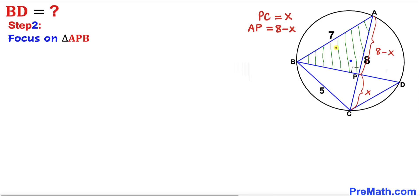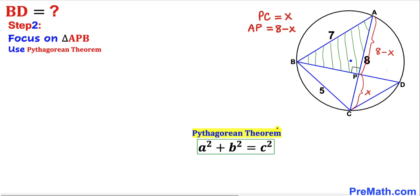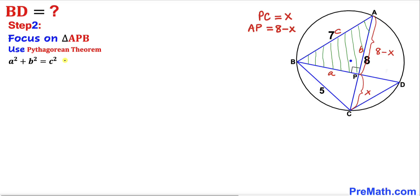Let's focus on triangle APB. We know that this is a right triangle, so therefore we are going to use the Pythagorean theorem: A² + B² = C². The hypotenuse is C. Filling in the blanks: BP² + (8 − X)² = 7².